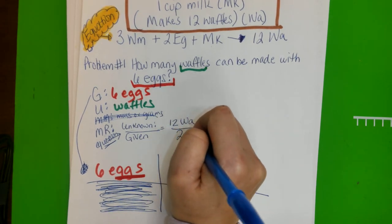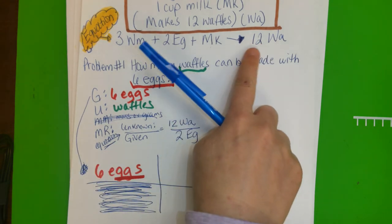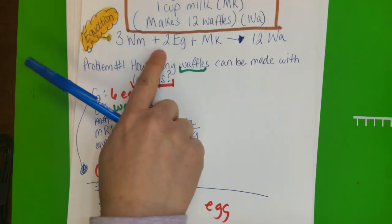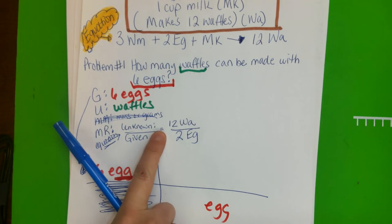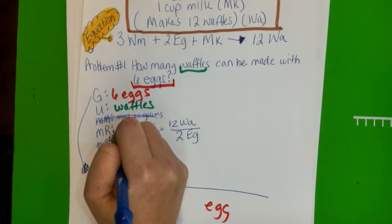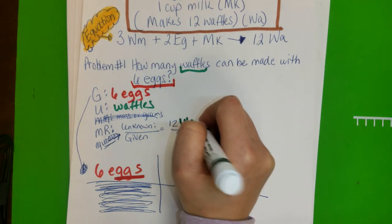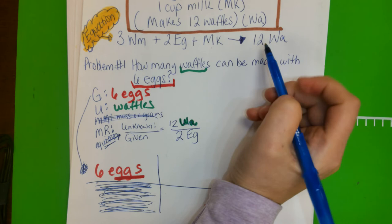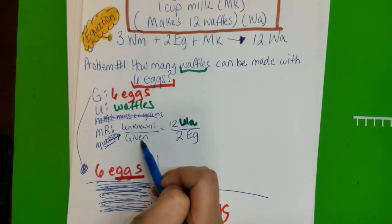So it would be two and then EG. Okay, so you need those numbers, those moles, the 12 and the two, and that's how you guide yourself. Okay, so again this is based on the equation, and then your unknown is waffles, right? Okay, but you get the number, you get the waffles from the equation. Okay, and then the given is eggs, so the eggs.